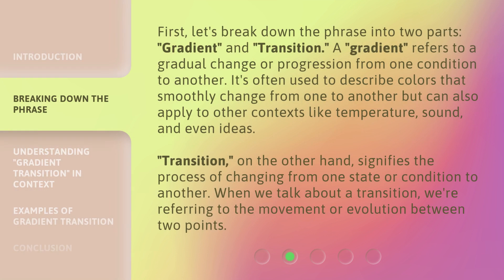First, let's break down the phrase into two parts: gradient and transition. A gradient refers to a gradual change or progression from one condition to another. It's often used to describe colors that smoothly change from one to another, but can also apply to other contexts like temperature, sound, and even ideas.